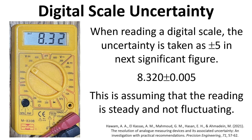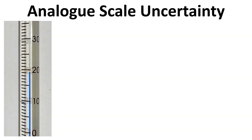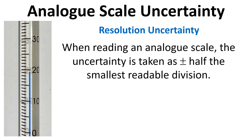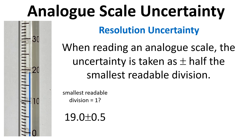This applies whether there are more or fewer decimal places — it depends on what level of significant figures your reading is on the scale. For an analog scale, we think about resolution uncertainty. The uncertainty is taken as plus or minus half the smallest readable division. For example, with a thermometer where the smallest readable division is 1, the reading shown is 19 plus or minus 0.5.